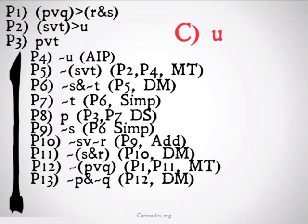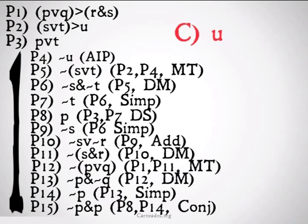Once again, whenever you see that negation outside of a disjunction, you should think DeMorgan's rule. We'll use that. We'll get not P and not Q, 12 DeMorgan's. We'll simplify that down to not P. Premise 13, simplification. We'll go ahead and conjoin 8 and 14 with conjunction to get not P and P, which is, of course, a contradiction, meaning we are done with our indirect proof, and we can conclude U from 4 through 15, indirect proof.